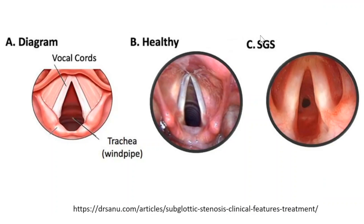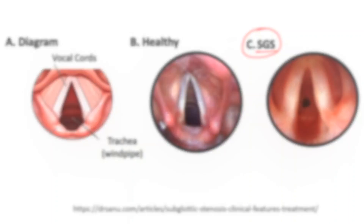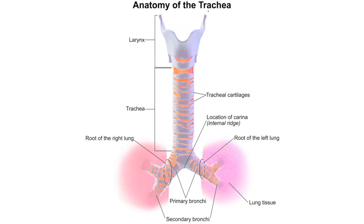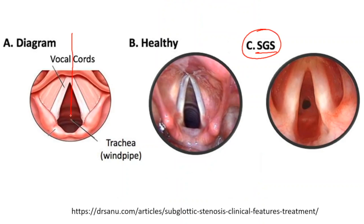What we have here is a subglottic stenosis, or SGS. Let's look at what things would look like if we put a scope down into someone's airway. We're putting a bronchoscope or laryngoscope in and looking down into this airway. The vocal cords are right about here — those two structures that come together to form your voice when you speak. Looking down the trachea in a healthy situation, here are the vocal cords. These come together and vibrate like two rubber bands, giving you your voice. They remain open when you're whispering.